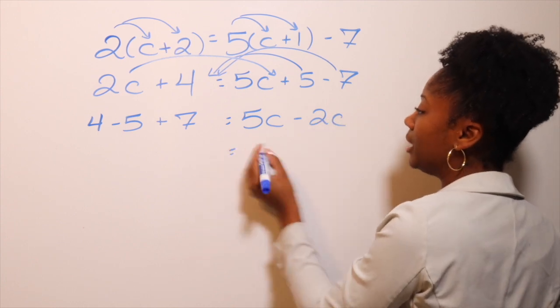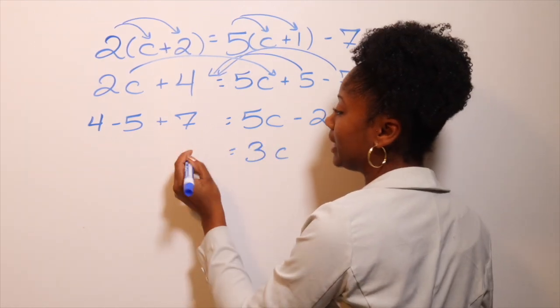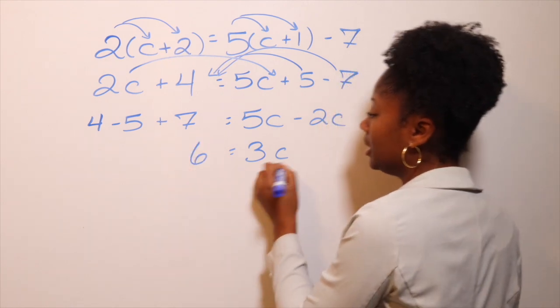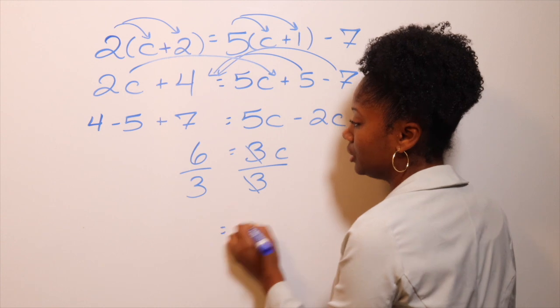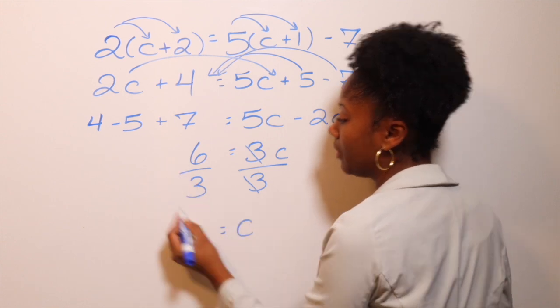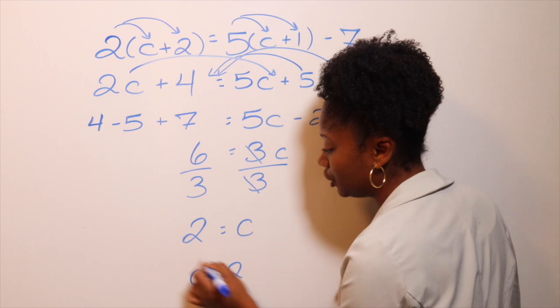So 5C minus 2C is 3C. 4 minus 5 plus 7, that is 6. Last step, you divide. So C, 6 divided by 3 gives you 2. Therefore, C equals 2.